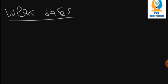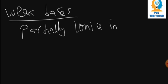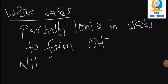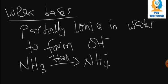Weak bases are bases that partially ionize in water to form hydroxide ions. For example, ammonia is a weak base that when put in water forms an ammonium ion and a hydroxide ion. So thank you so much. Don't forget to subscribe and share. I'll see you in the next video, which will be talking about preparation of salts.